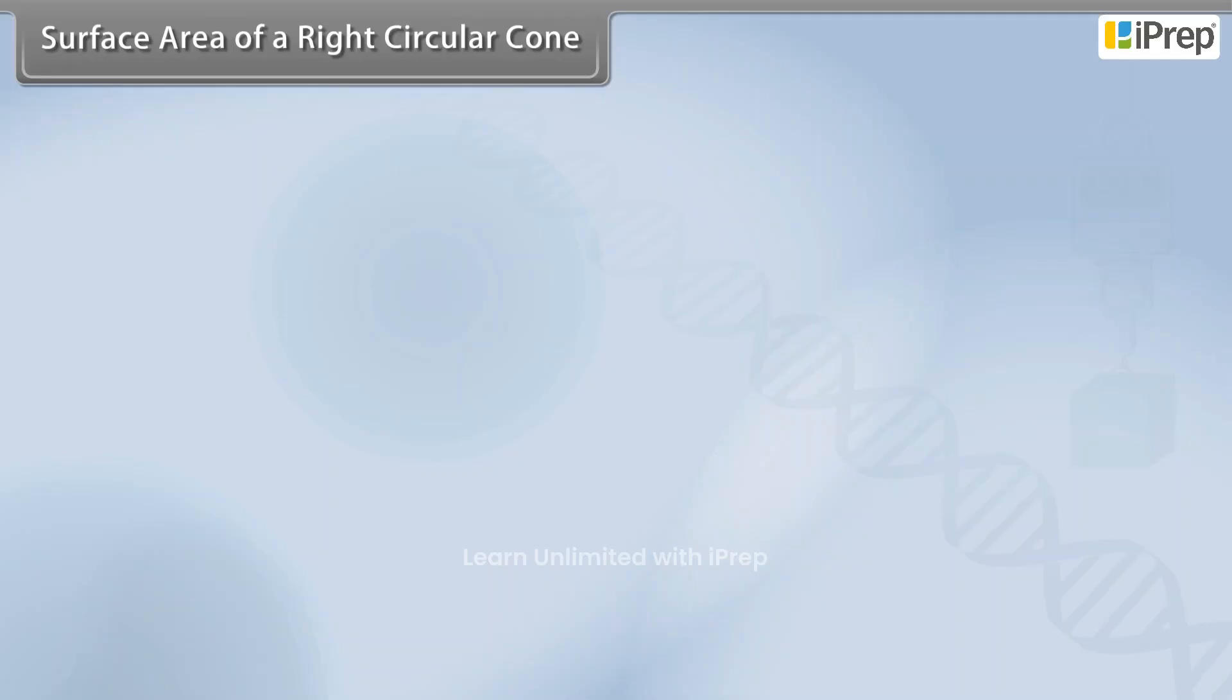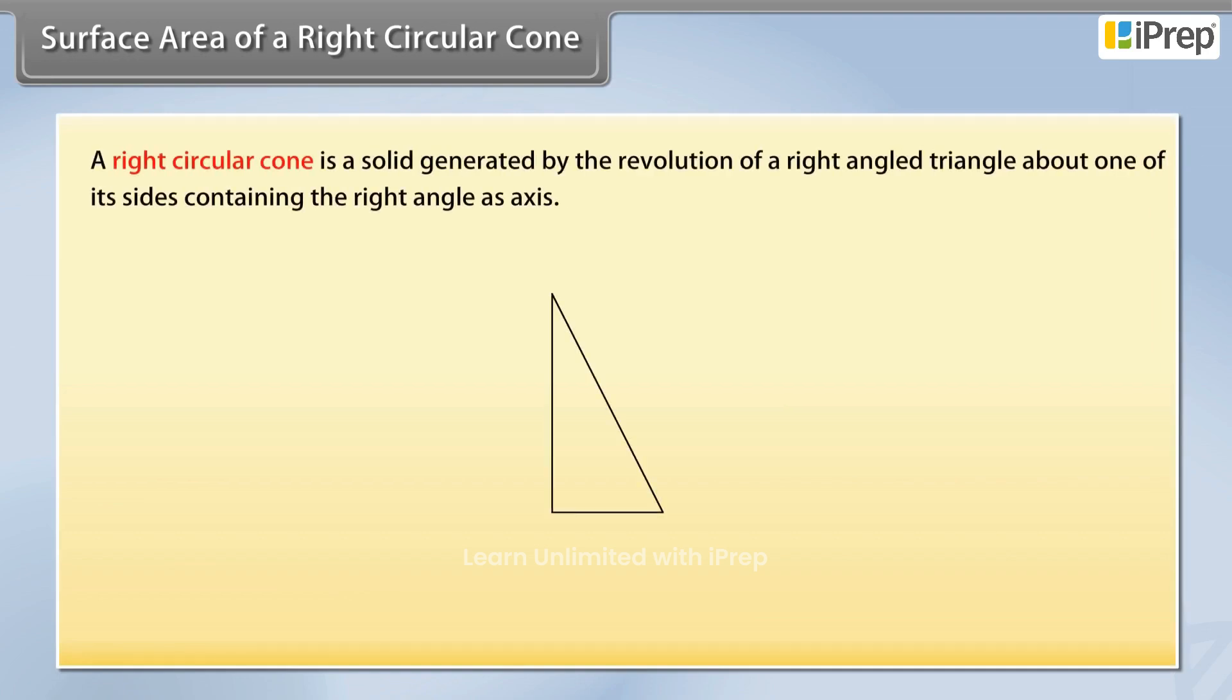Surface Area of a Right Circular Cone. A right circular cone is a solid generated by the revolution of a right-angled triangle about one of its sides containing the right angle as axis.